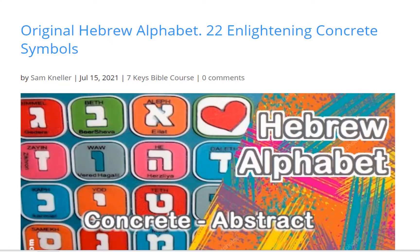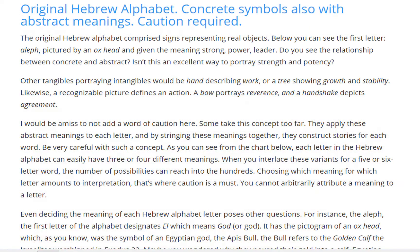Welcome to The Explanation with Sam Kneller. This episode is 'Original Hebrew Alphabet: 22 Enlightening Concrete Symbols with Abstract Meanings,' from the course 'Unlock Bible Meaning with 7 Keys to Master Biblical Hebrew,' available at TheExplanation.com. Caution required.